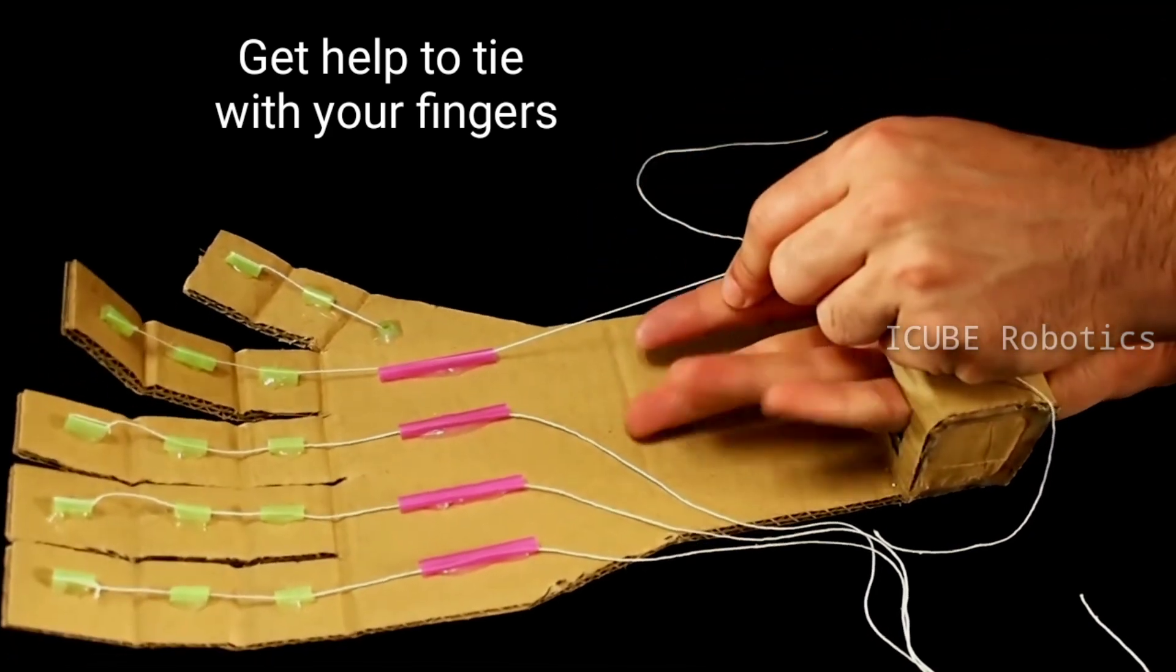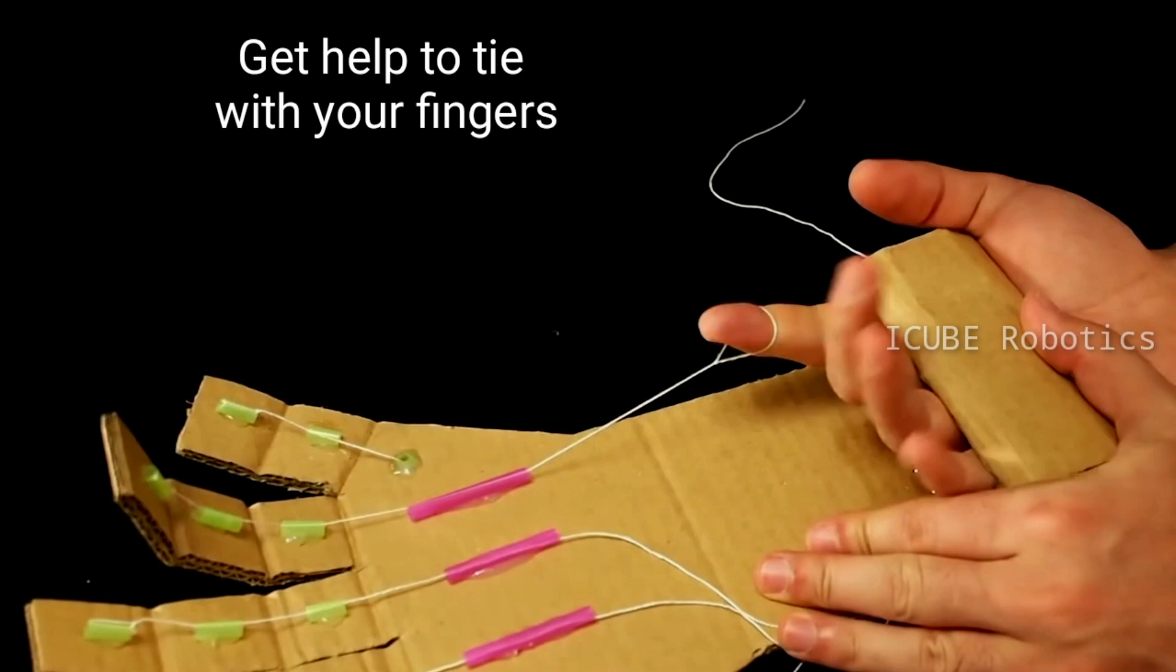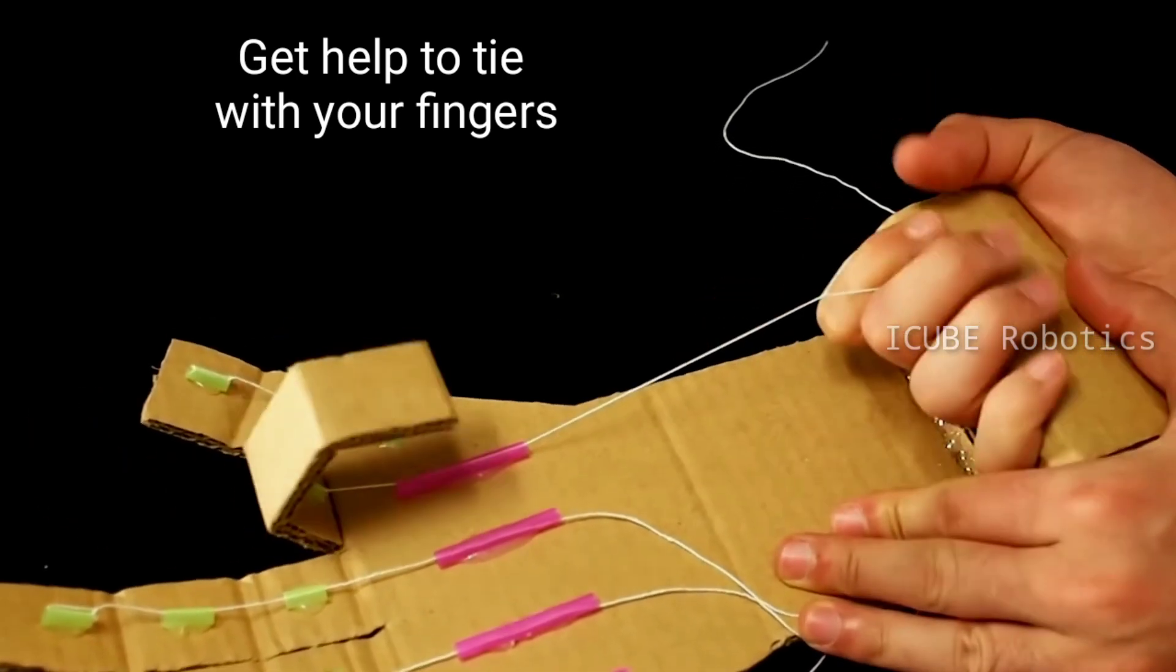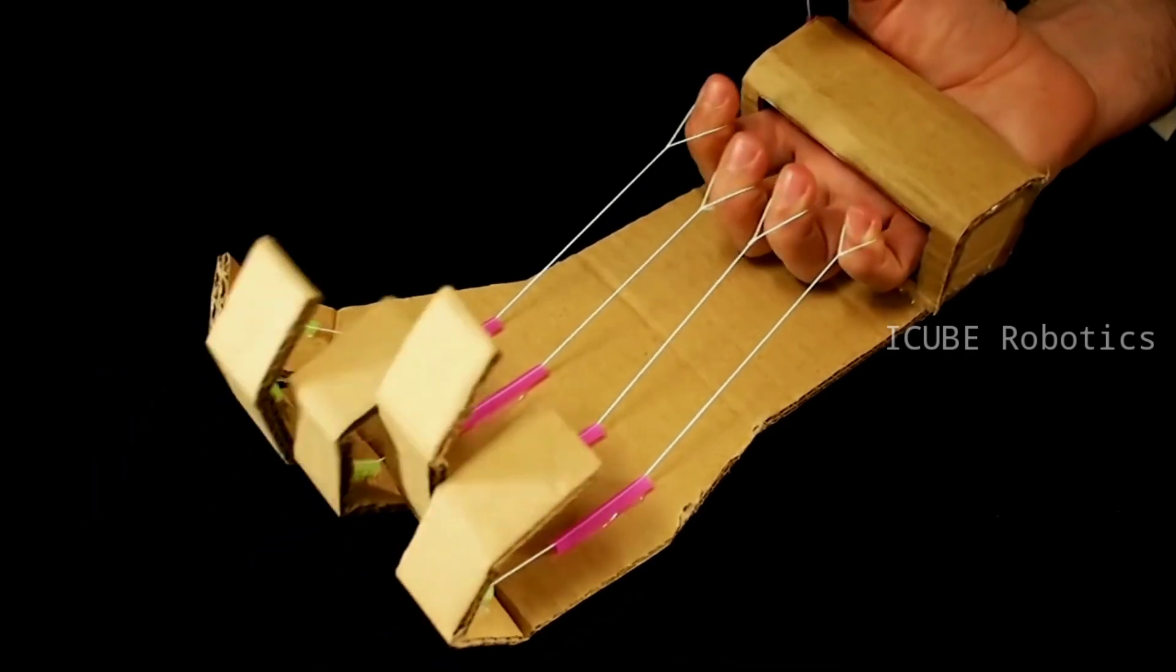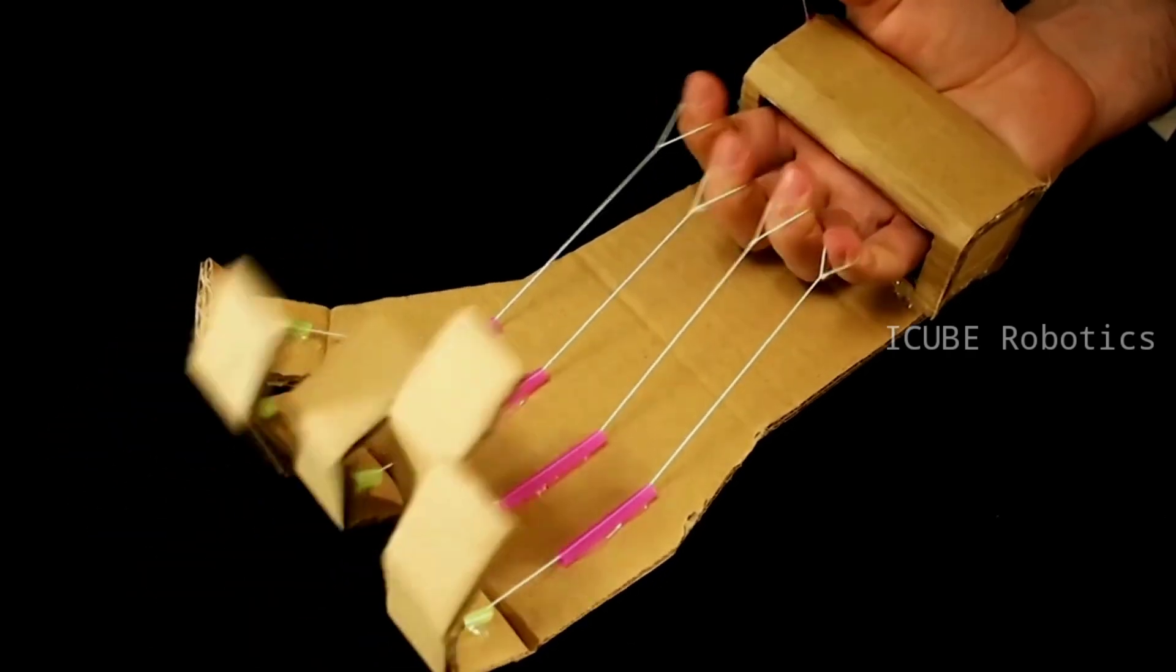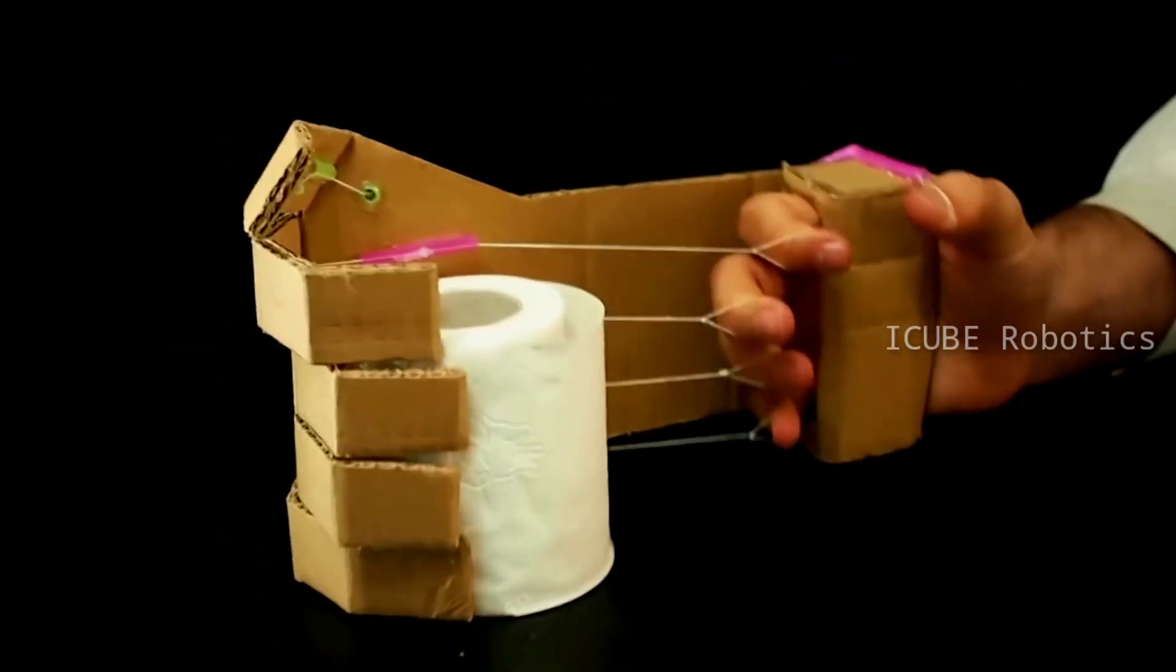Now with the length measured, you have to tie it with the finger. You can ask your parents to help on this. And finally, our simple robotic arm with cardboard is ready. Wow, isn't it amazing?